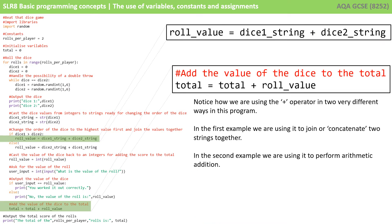You'll notice how we're actually using the plus operator here in two very different ways in our program. So in the first example, higher up the program where we're saying role value equals dice one string plus dice two string, we're actually joining together or concatenating two string variables. In the second example, the plus is performing an arithmetic operation of addition and is adding the value of total to the value of role value. When the same symbol is used to do two completely different things, it's actually known as overloading. But this is not something you need to worry about at GCSE.